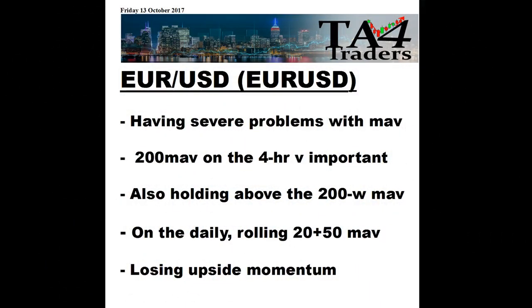So that's been TA for Traders looking at the Euro against the US Dollar. The key takeaways should be that we're having severe problems with the moving averages, especially the 200 on the 4-hour — that's now very important. We've also got the rolling 20 and 50, but we are holding above the 200 week average, so be aware of that, but we are losing upside momentum.